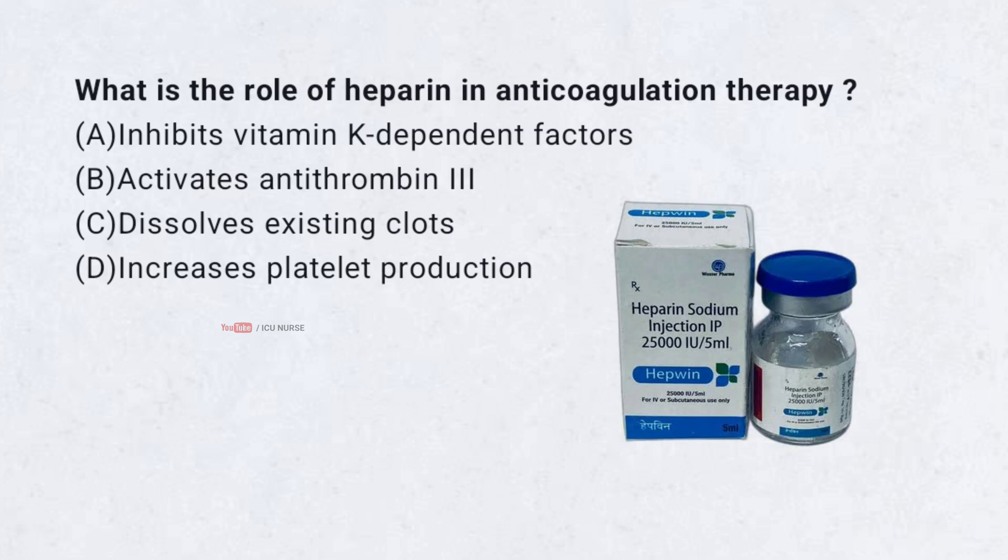What is the role of heparin in anticoagulation therapy? A. Inhibits vitamin K-dependent factors, B. Activates antithrombin 3, C. Dissolves existing clots, D. Increases platelet production. Correct answer: B. Activates antithrombin 3. Heparin enhances antithrombin 3's ability to inactivate thrombin and factor XA.